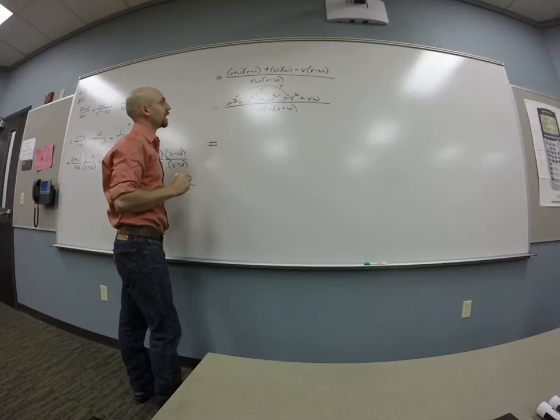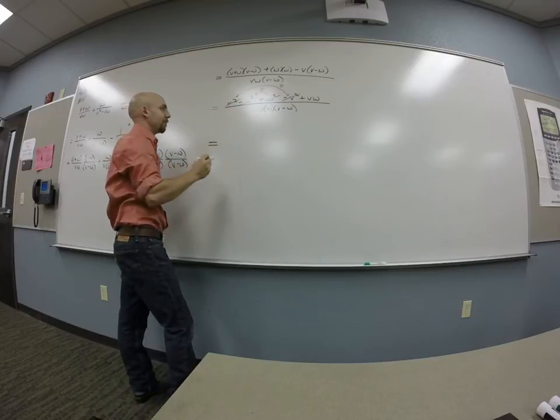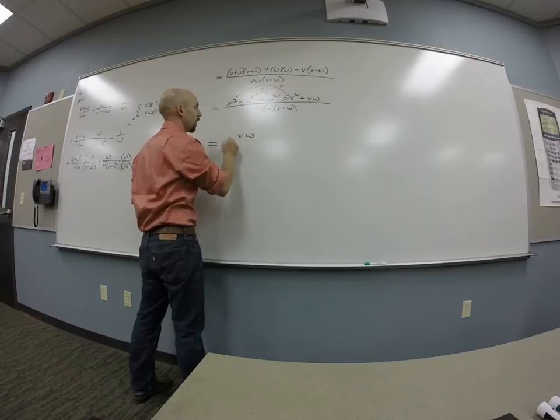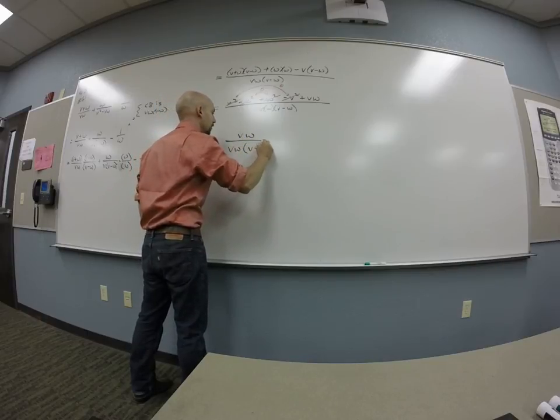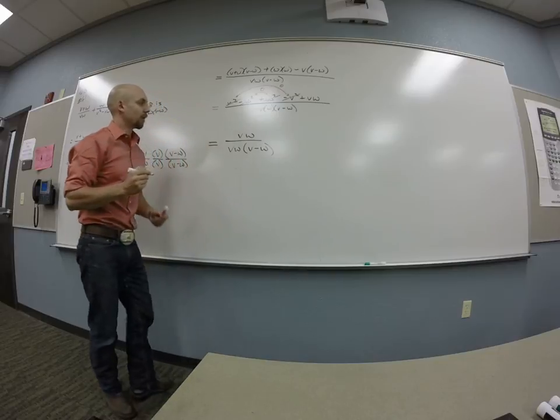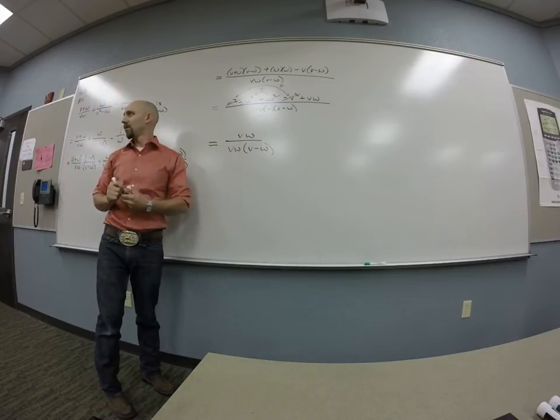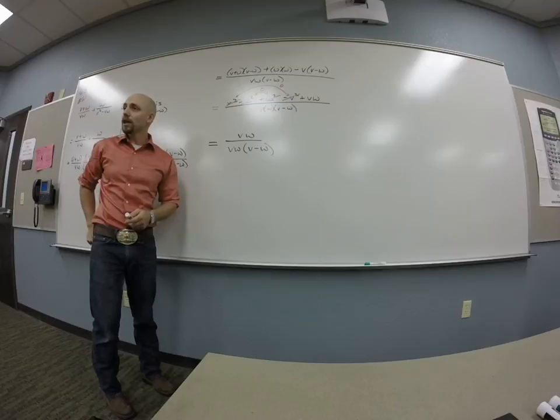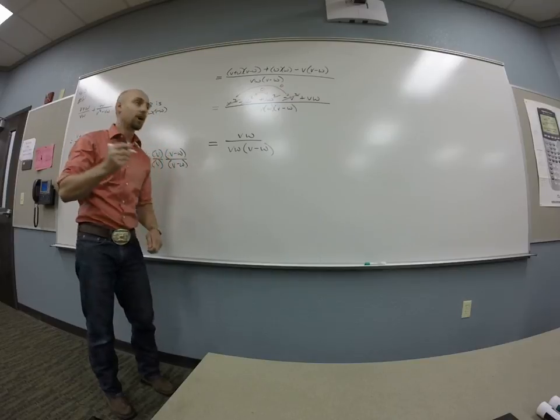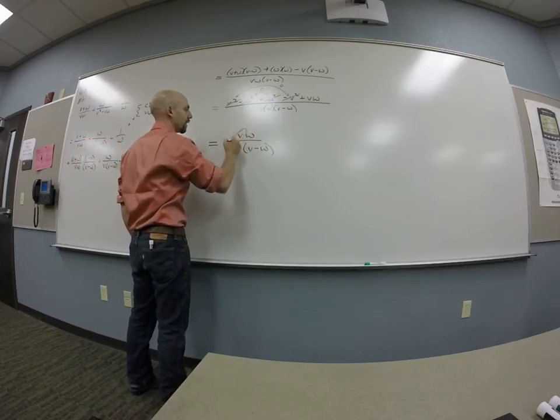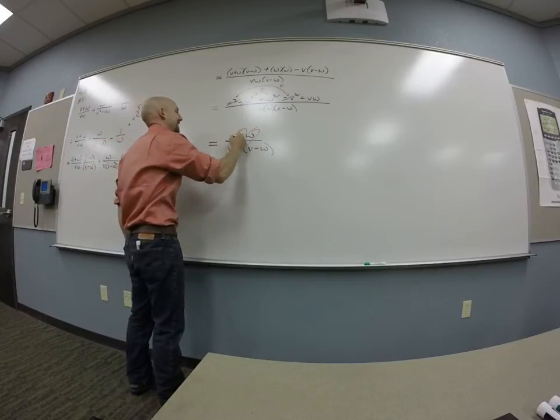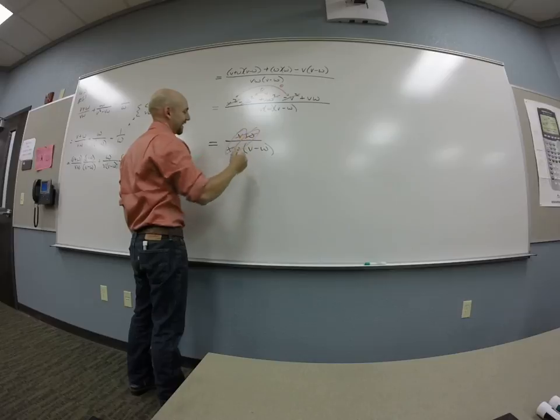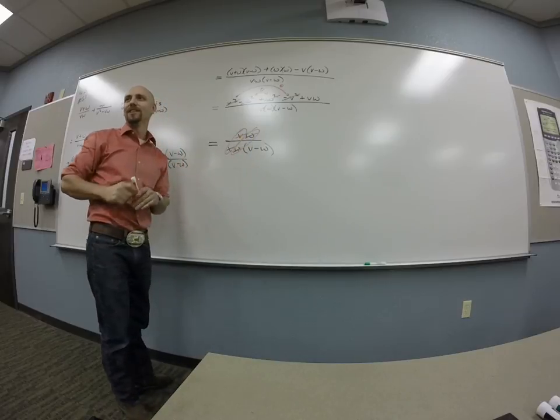Now in my next step, let's see. I crossed everything on the top out except the VW. So I've got VW over VW times V minus W. Now what can I do? Yeah, now I can cancel the other way, right? These are onesies. So there's a onesie and there's a onesie. Yes, Caitlin is turning a onesie.